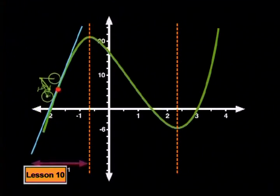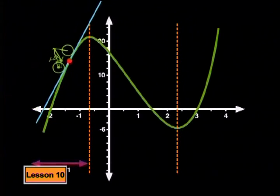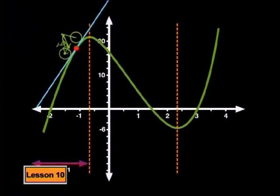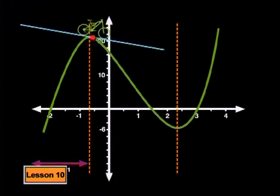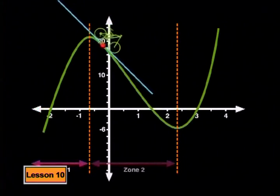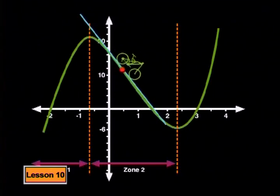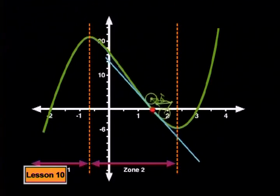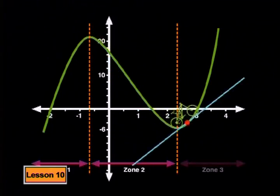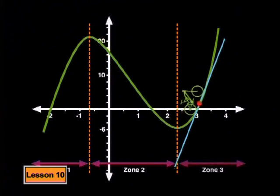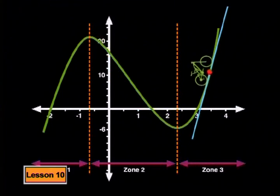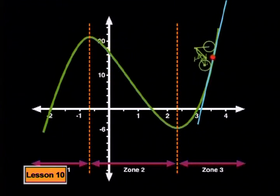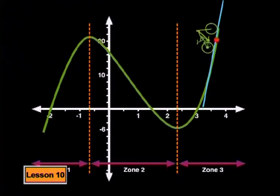The bicycle starts off going uphill. It is still going uphill. And now the bicycle is going downhill. It is still going downhill. The bicycle is going uphill again. It is still going uphill. As you said, that was easy enough.